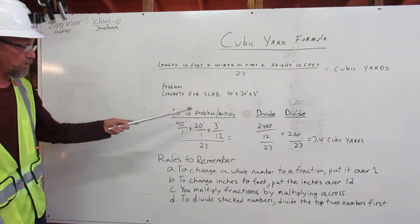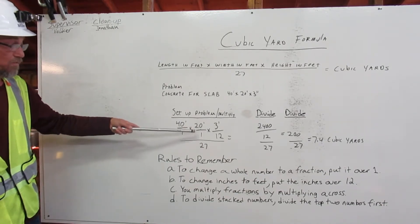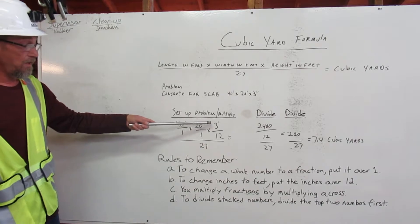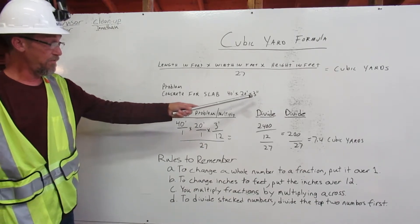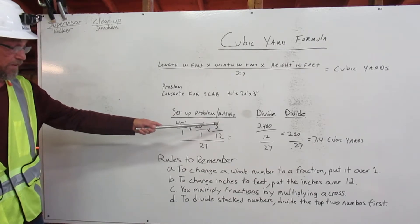Set up problem and multiply. 40 feet over 1, 20 feet over 1, times 3 over 12. 3 inches needs to be put in feet, which gives you 3 feet over 12.